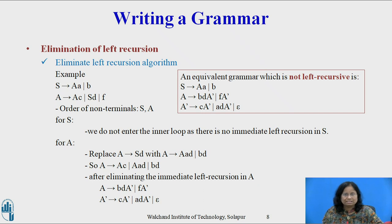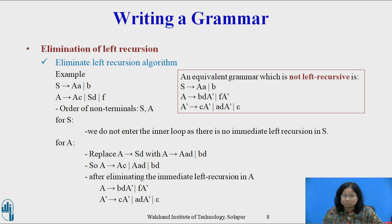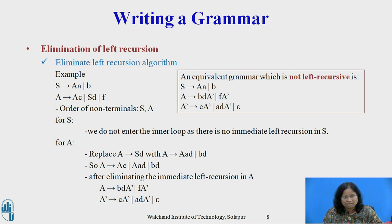Example: Given S derives Aa | b, A derives Ac | Sd | f. Order of non-terminals: S, A. For S, we do not enter the inner loop as there is no immediate left recursion in S. For A, replace A derives Sd with A derives Aad | bd. So A derives Ac | Aad | bd. After eliminating immediate left recursion in A: A derives bdA' | fA', and A' derives cA' | adA' | ε. This is the equivalent grammar which is not left recursive.